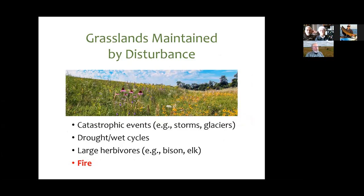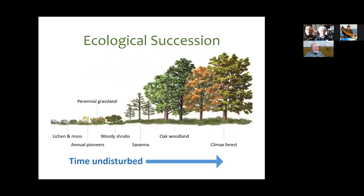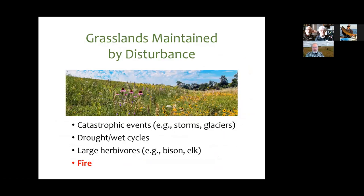There are basically four kinds of disturbance on this type of landscape. There are catastrophic events like tornadoes or big downdraft storms that knock all the trees down and set the clock back to the grassland stage. Drought and wet cycles also play a part — if it gets dry enough, trees are less able to survive than grassland. Large herbivores like bison and elk can also play a large part where they're present.